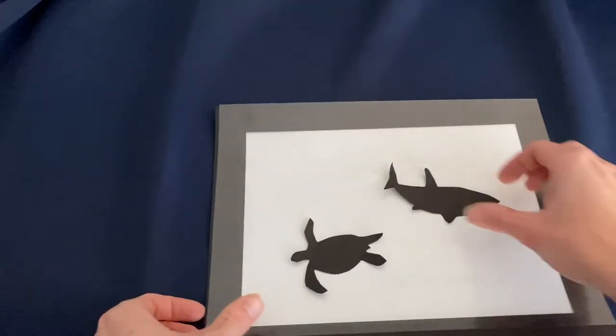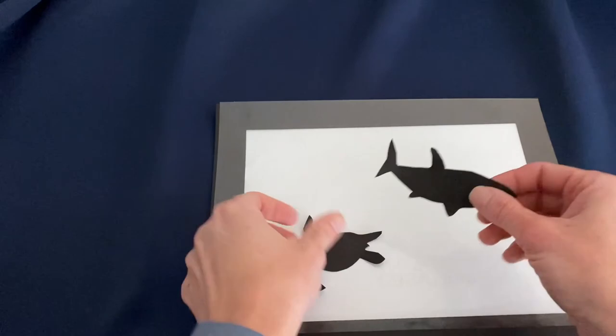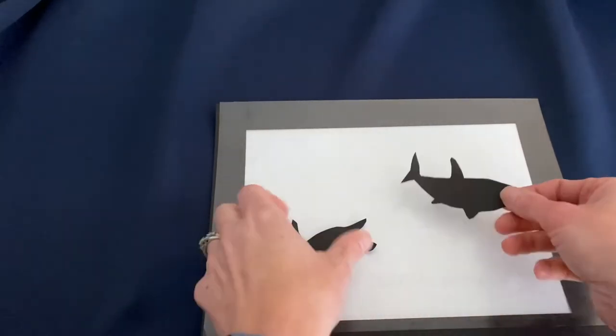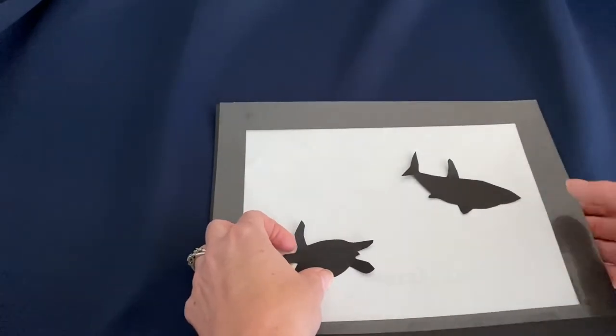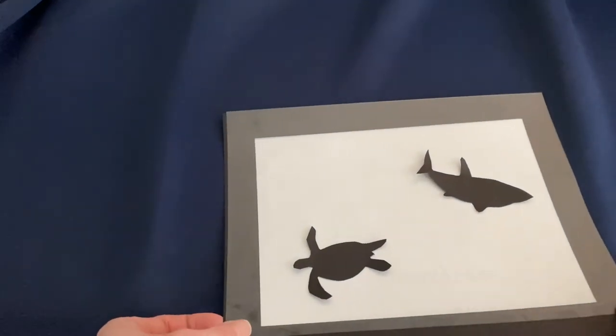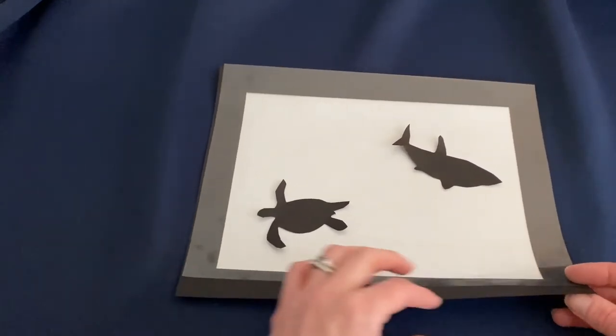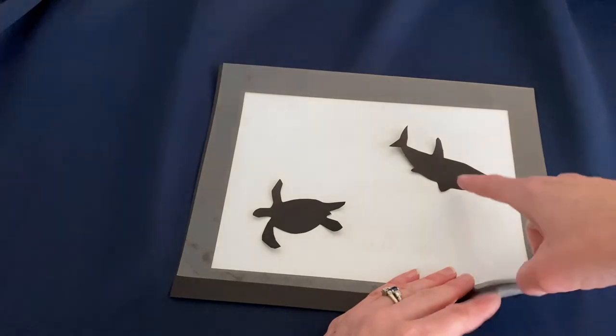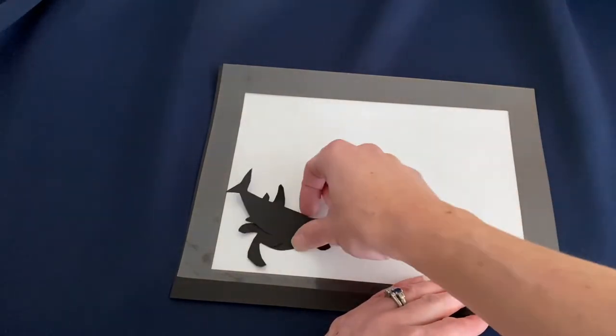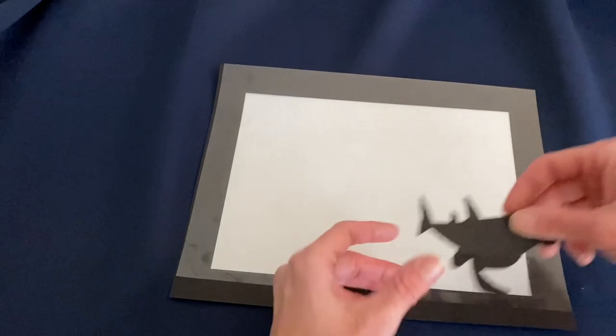We have these two silhouettes here. A silhouette is just an outline of an animal. You'll often see a silhouette when you have light shining behind something and you can't see any details - it just looks black or dark. I'm going to put these aside.